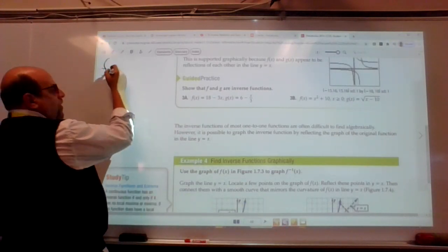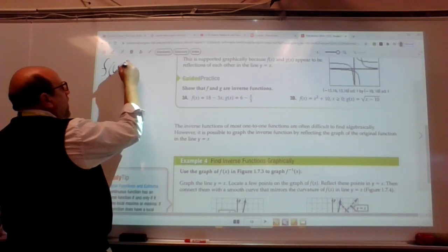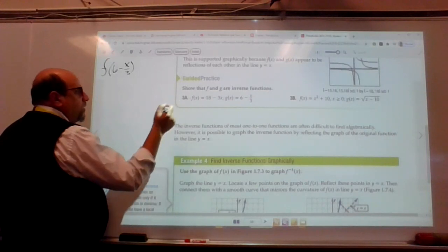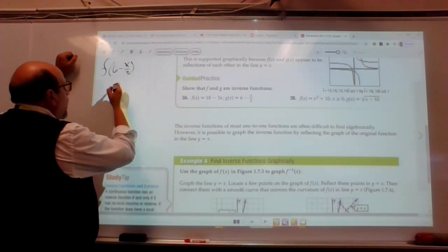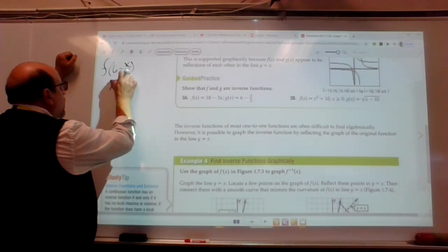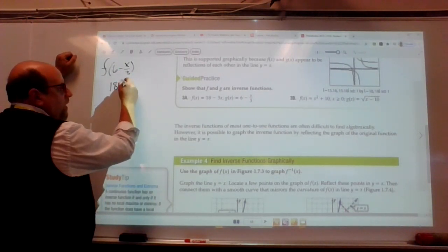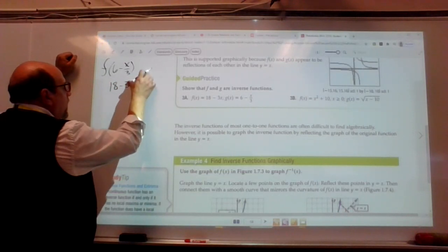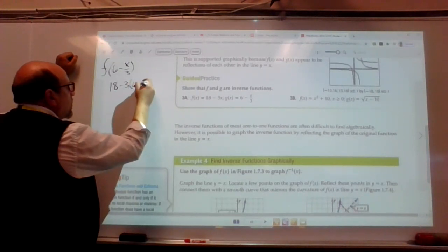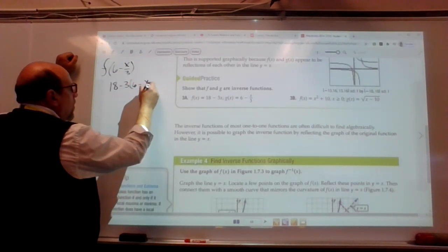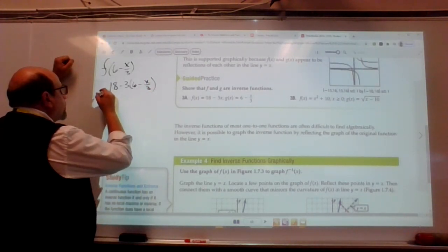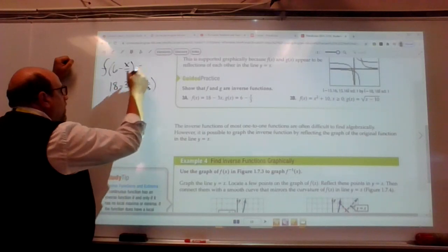We're going to say f of 6 minus x over 3. And then we're going to show it as x, oh sorry, 18 minus 3 times 6 minus x over 3. And then we can do the math, right? And that's what this equals.